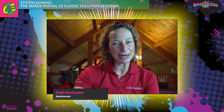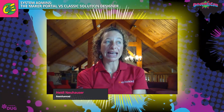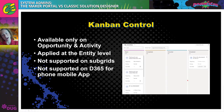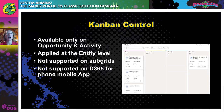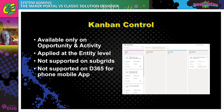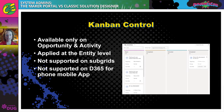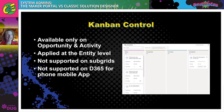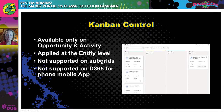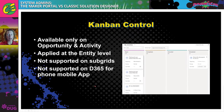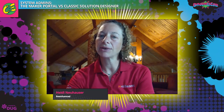The Kanban control is available only on opportunity and activity. It allows you to visualize your data differently — activities shown in columns: open, completed, canceled, or scheduled, all from one place. It's applied at the entity/table level, not supported on subgrids, and unfortunately not supported on the Dynamics 365 for phone mobile app. If you have users who might resonate with this, apply it in sandbox, let them test drive it, and see what they think.